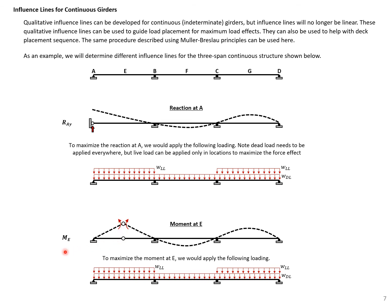We can do the same for moment. Looking at the moment at point E, we release the moment restraint by adding a hinge, apply the moment back, and displace the structure. This tells us where to apply loads to maximize or minimize the moment at E. With that, this example is concluded.